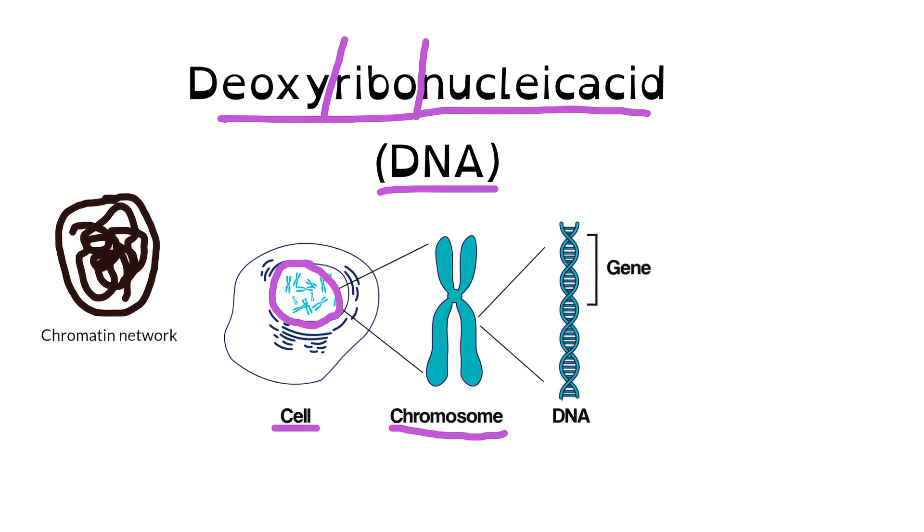Now a chromosome essentially is a condensed piece of DNA. And in humans, we have 46 chromosomes. We've inherited 23 from our mother and 23 from our father.